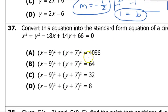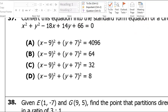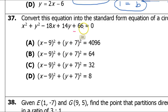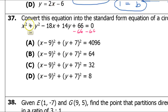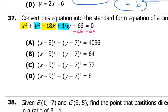Moving on to number 37: take this equation and write it in standard form. I need to move the 66 out of the way by subtracting 66 from both sides, and I need to reorganize so the x-terms are together and the y-terms are together.